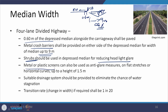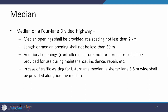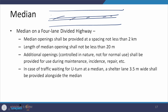Another way to reduce headlight glare is to use metal or plastic anti-glare screens, which can be used on flat stretches and horizontal curves up to a maximum height of 1.5 meters. A suitable drainage system must be provided to prevent stagnation of water in the median, with a drain at the center to collect water flowing from either side due to camber, and drain it longitudinally and transversely out of the system. Any transition rate, if required, is done at 1 in 20.